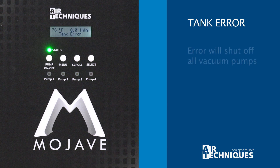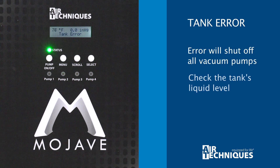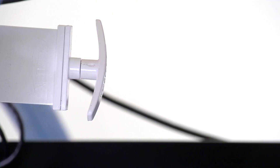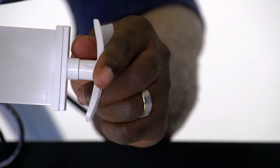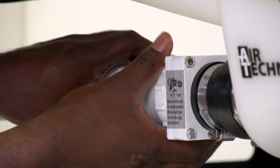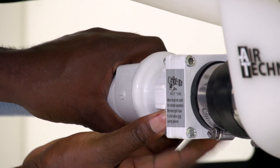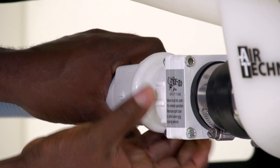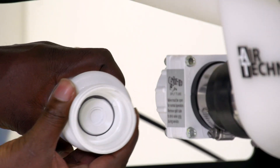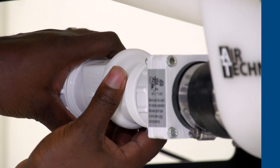The tank error shuts off all vacuum pumps. Check the liquid level in the tank. If it is high, ensure that the gate valve is open and the tank drain check valve is not clogged. Open the valve and/or fix the clog and allow one minute for the tank to drain, and the pump should turn back on automatically.